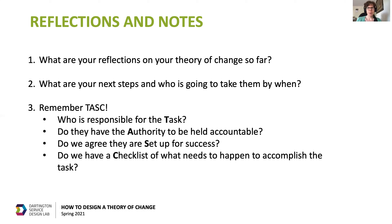What are your next steps to make your theory of change really work for you? If you draw up a list of jobs to be done, it might be helpful to consider the TASK acronym to make delegation easier: who is responsible for the task, do they have the authority to be held accountable, do we agree that they're set up for success, and do they have a checklist of what needs to happen to accomplish the task? It's also really important to agree what finished and done looks like — what will you have and what will you be able to do when this delegated task is complete?